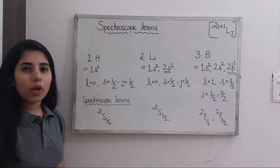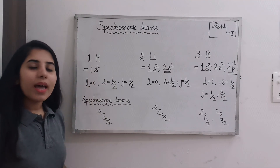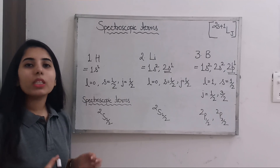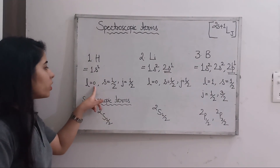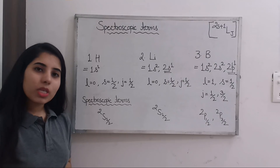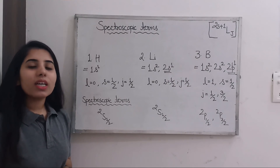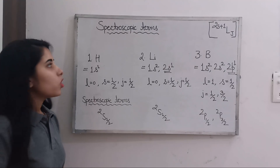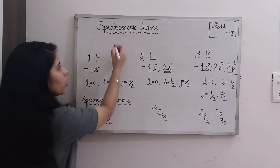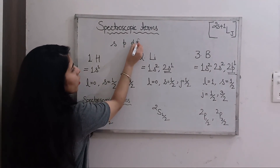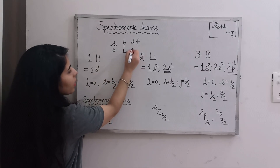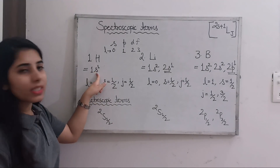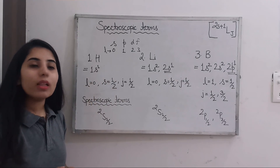For hydrogen, the electronic configuration is 1s1. The next step is to find the value of L, the orbital quantum number. L will be equal to 0. We have the different orbitals s, p, d, f — corresponding to these, the values of L are 0, 1, 2, and 3 respectively. Since we have 1s1 here, meaning the s orbital, the value of L is 0.